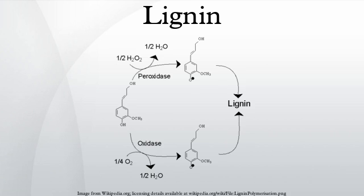Lignin is a complex polymer of aromatic alcohols known as monolignols. It is most commonly derived from wood, and is an integral part of the secondary cell walls of plants and some algae.